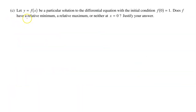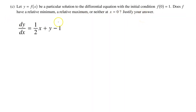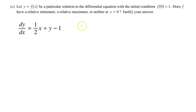Part C: Let y equals f(x) be a particular solution with initial condition f(0) equals 1. Does f have a relative minimum, relative maximum, or neither at x equals 0? We can use the second derivative test. For the first derivative test, since dy/dx is written in terms of x and y, it's not conducive to making a sign chart, so we'll use the second derivative test instead.